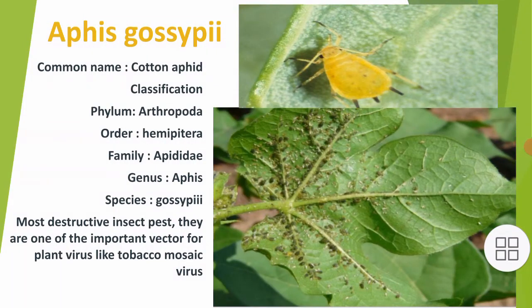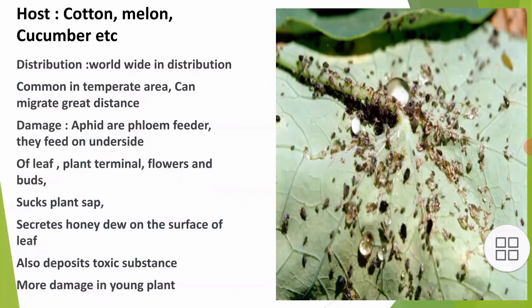Aphis gossypii, commonly known as cotton aphid, is one of the most destructive insect pests. They are important vectors for plant viruses like tobacco mosaic virus, meaning they carry the disease from one plant to another.